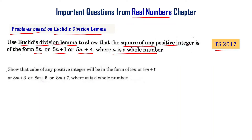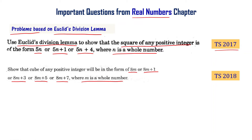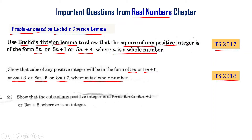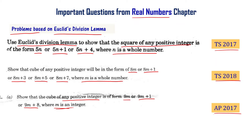Show that the cube of any positive integer will be in the form of 8m or 8m plus 1 or 8m plus 3 or 8m plus 5 or 8m plus 7, where m is a whole number — Telangana final exam 2018. Also: show that the cube of any positive integer is of the form 9m or 9m plus 1 or 9m plus 8, where m is an integer — AP final exam 2017.